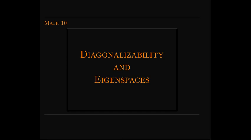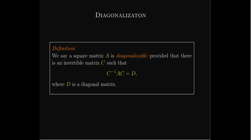We're talking about: is a matrix diagonalizable and how is that connected to eigenspaces? Let's define diagonalizable. Matrix A has to be a square matrix. It's diagonalizable if there's an invertible matrix C such that when you multiply on the left by C inverse and on the right by C, the resulting product is a diagonal matrix D. So by multiplying by C and C inverse you get a diagonal matrix. That's what it means by diagonalizable.